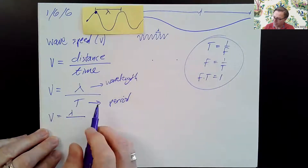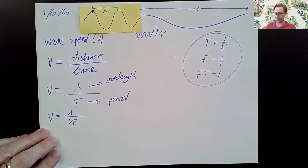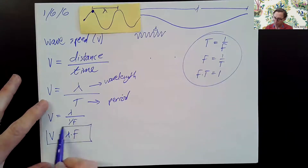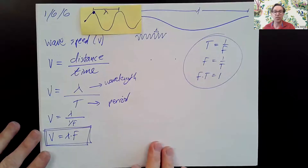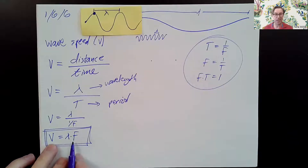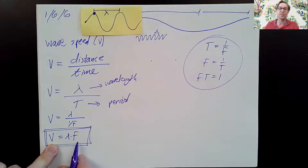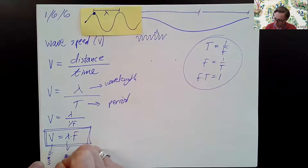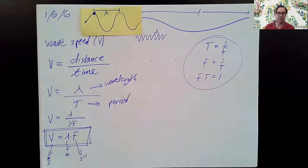If instead of period we write one over frequency, then we get speed equals wavelength times frequency — V equals lambda times f. This is the equation to become familiar with. If we know the wavelength and the frequency of a wave, that product equals V, the wave speed. If you know any two of these numbers, it's easy to find the third. The unit for velocity is meters per second, wavelength is meters, frequency is s to the minus one — meters times s to the minus one is meters per second. This is a super important equation worth writing down and highlighting.